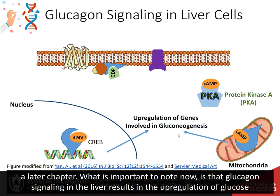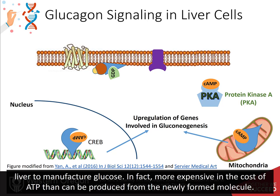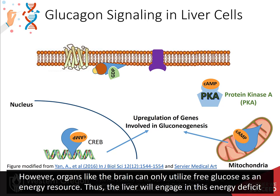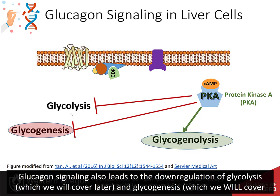What's important to note is that glucagon signaling in the liver results in the upregulation of glucose production de novo from non-carbohydrate precursors. This is not a favored pathway in the body — it's energetically expensive for the liver to manufacture glucose, costing more ATP than can be produced from the newly formed molecule. However, organs like the brain can only utilize free glucose as an energy resource, so the liver will engage in this energy deficit to build glucose for use by the brain and other cellular targets. Glucagon signaling will also lead to the downregulation of glycolysis, which we will cover later, and glycogenesis, which we will cover now.